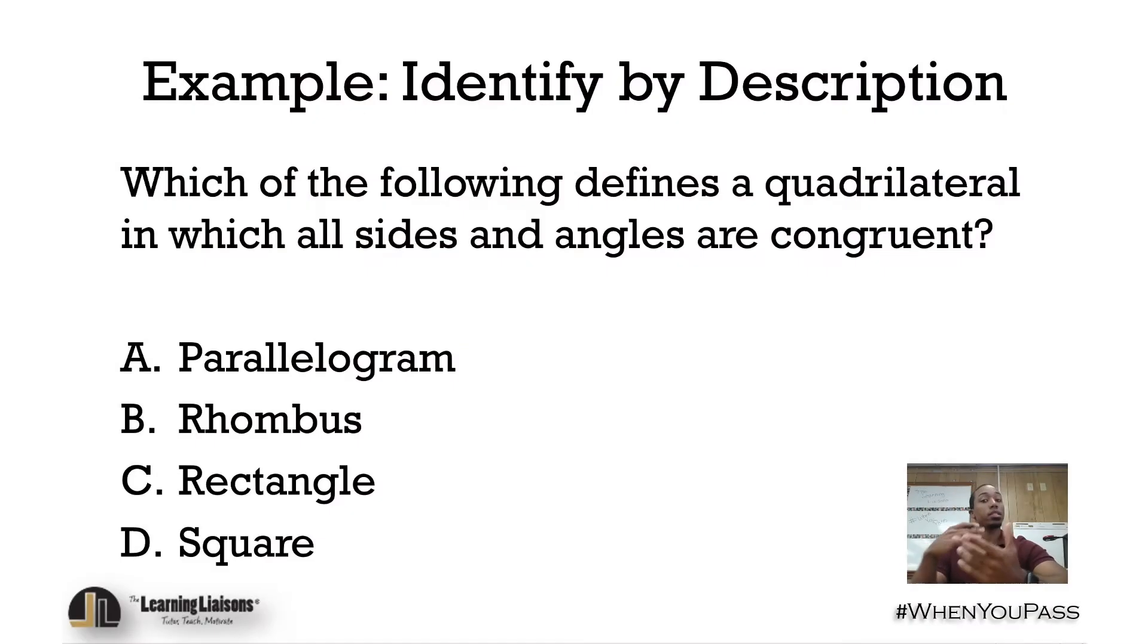So without further ado, let's go ahead and jump right into some examples that way we can get accustomed to this. First off, which of the following defines a quadrilateral in which all sides and angles are congruent?